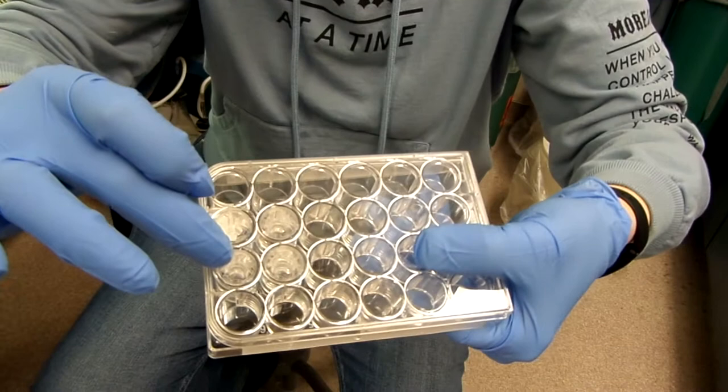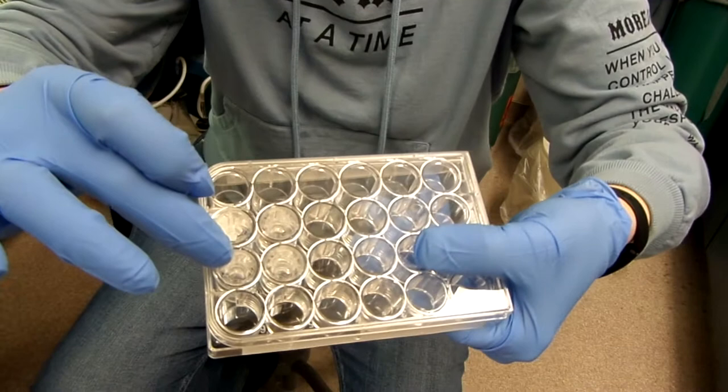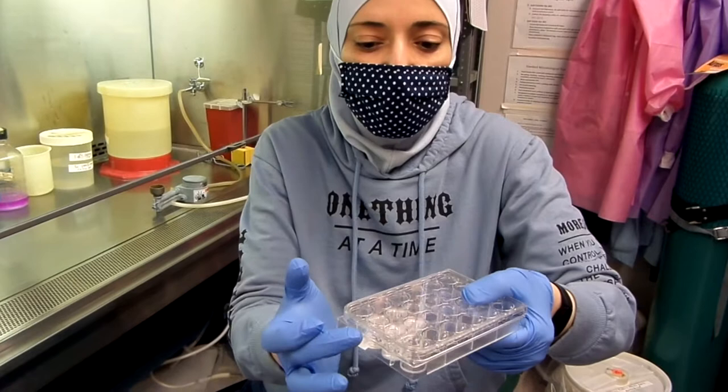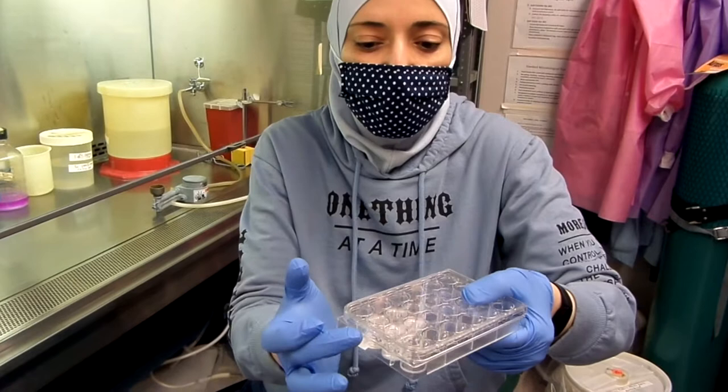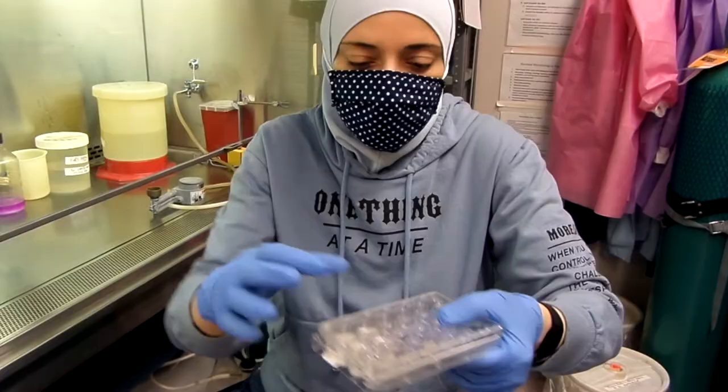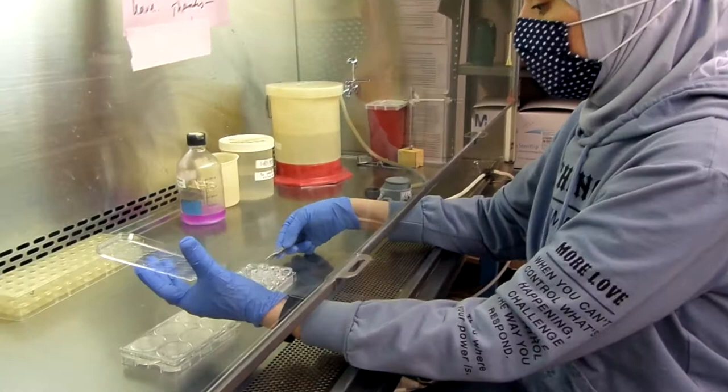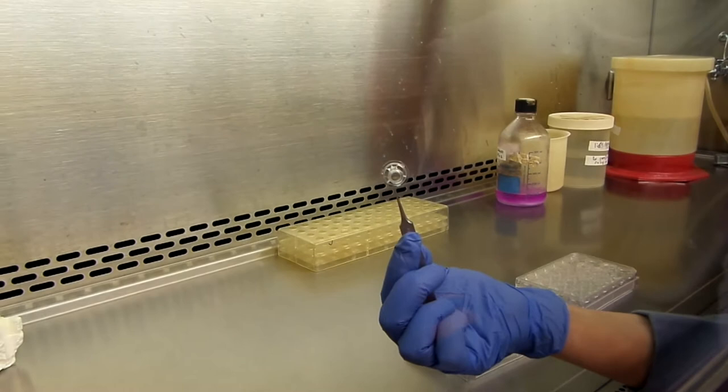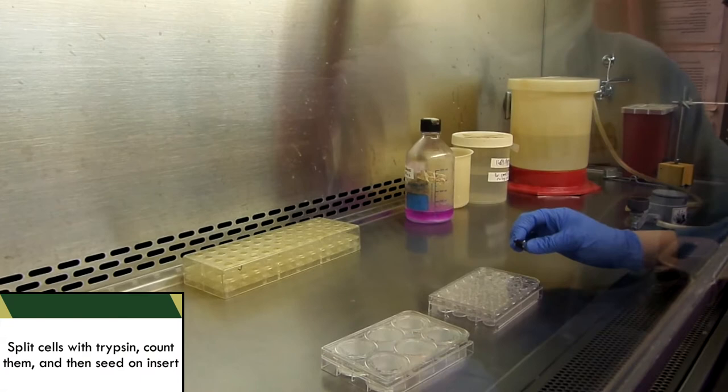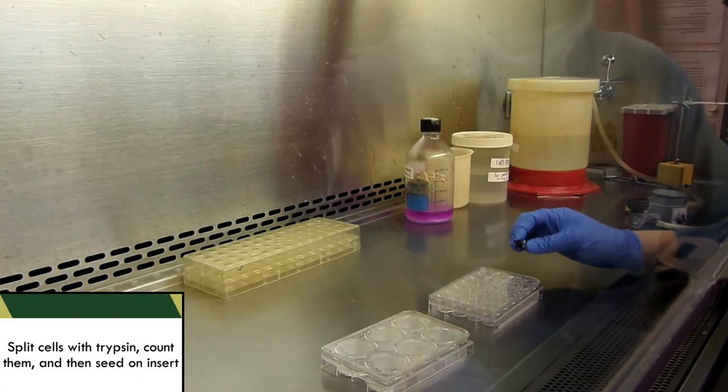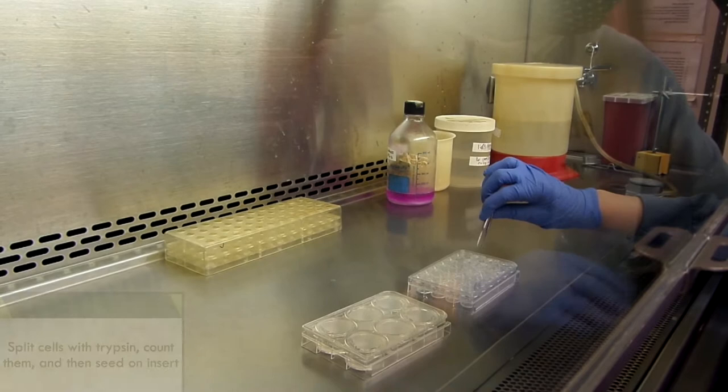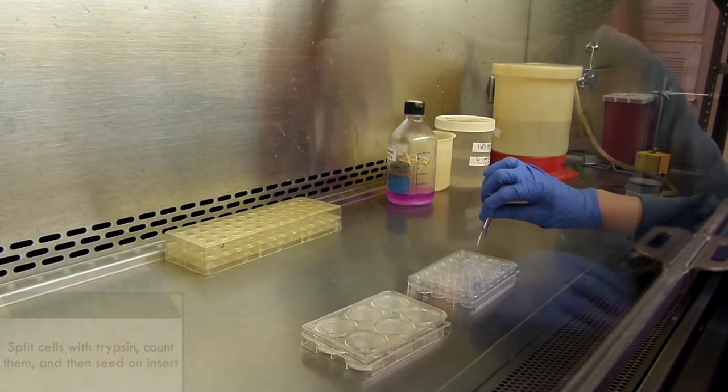I will seed the cells into the insert in here. This is the upper chamber. And I will allow the cells some time to migrate through the pores into the lower chamber that has the epidermal growth factor or the chemoattractant. Let me show you the insert. This is the insert, and the base has this porous membrane. What I will do is, I will split my cells using trypsin, count the cells, and then I will seed these cells on the upper chamber, and then give them some time to migrate.